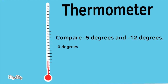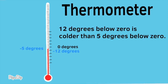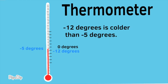Compare negative 5 degrees and negative 12 degrees. Here the mercury's location sits at negative 12 degrees, or 12 degrees below zero. As the temperature rises just a bit, the new location is negative 5 degrees, or 5 degrees below zero. 12 degrees below zero is colder than 5 degrees below zero. Negative 12 degrees is colder than negative 5 degrees.